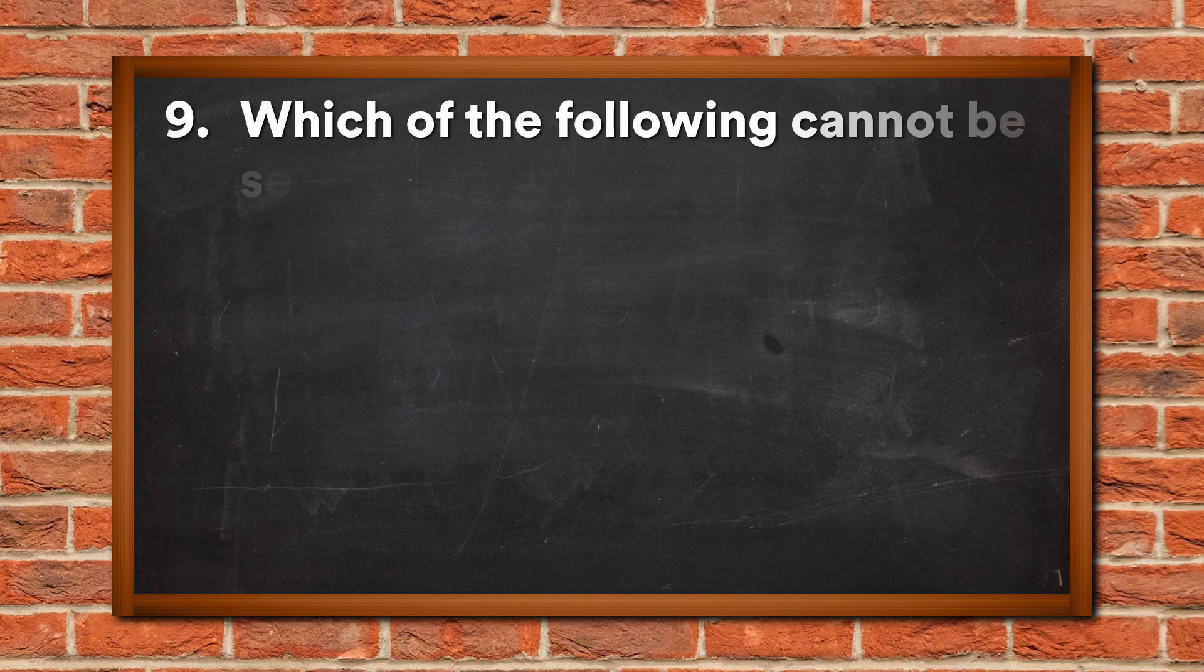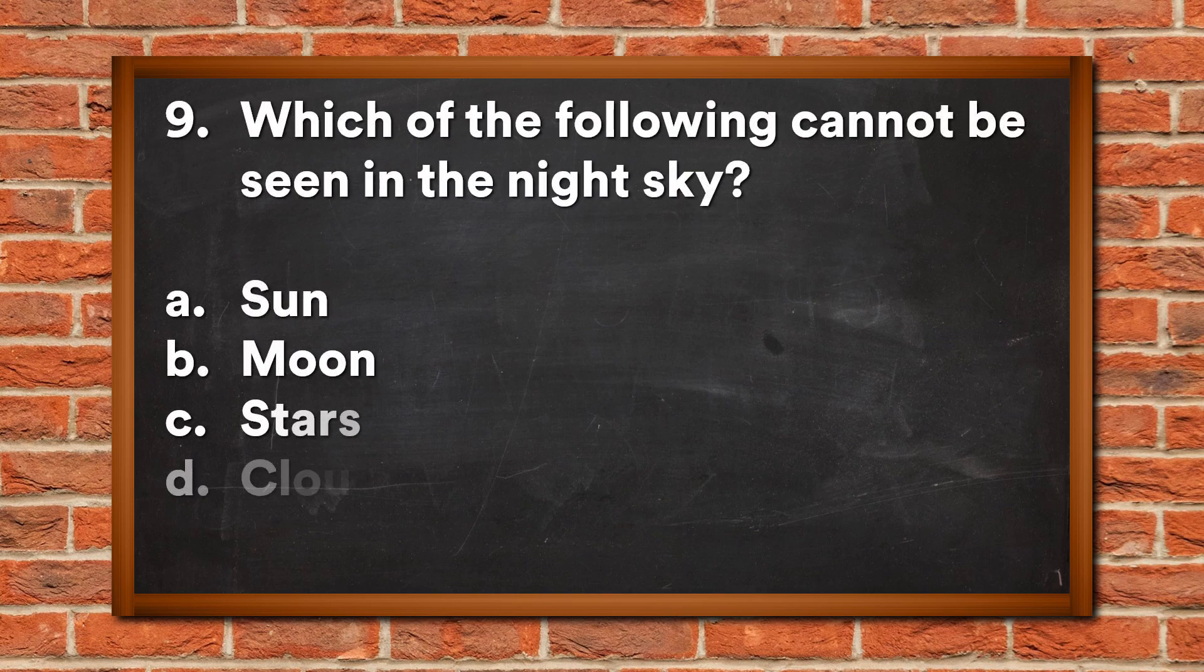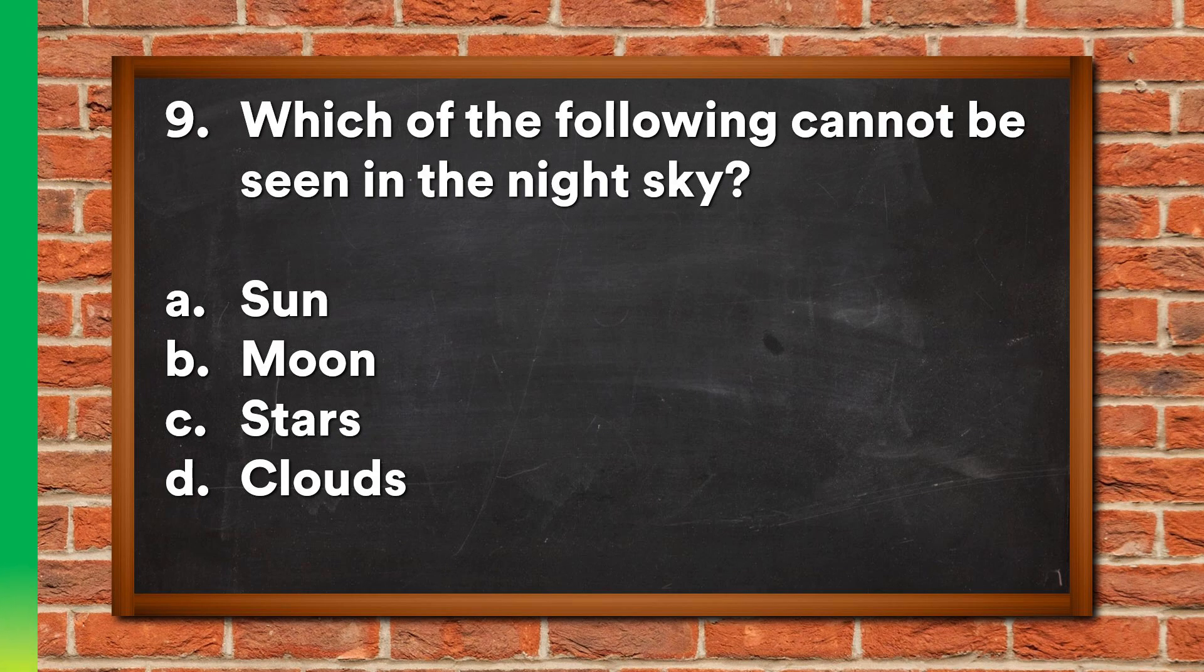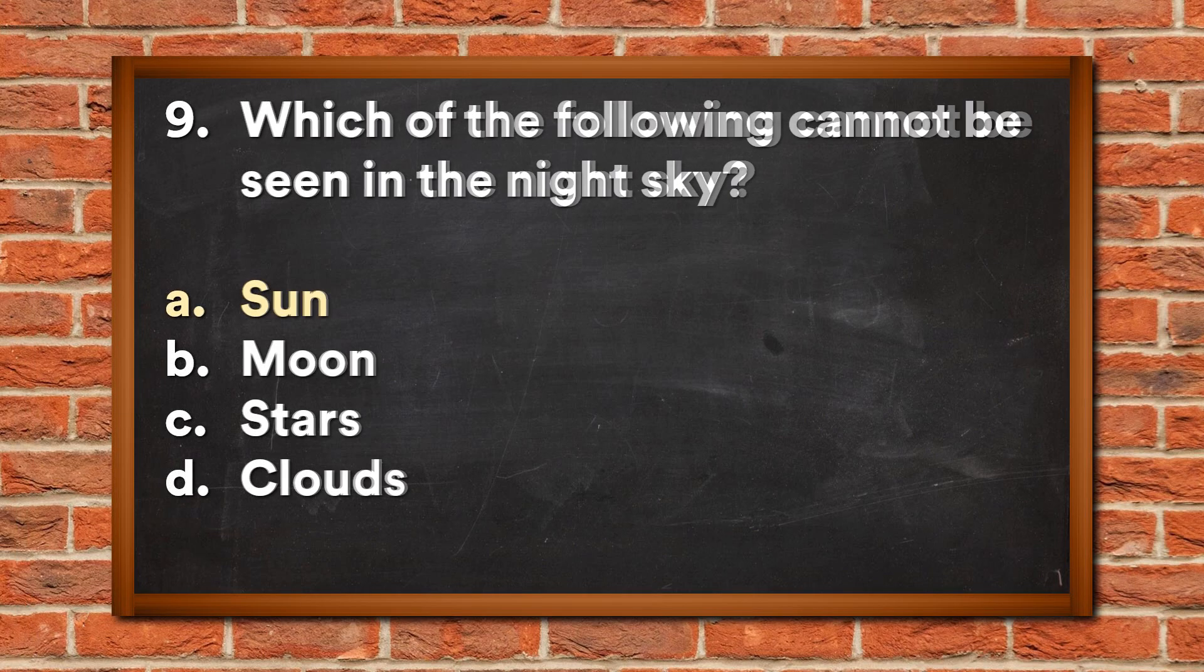Question 9: Which of the following cannot be seen in the night sky? A. Sun, B. Moon, C. Stars, D. Clouds. The answer is A, Sun.